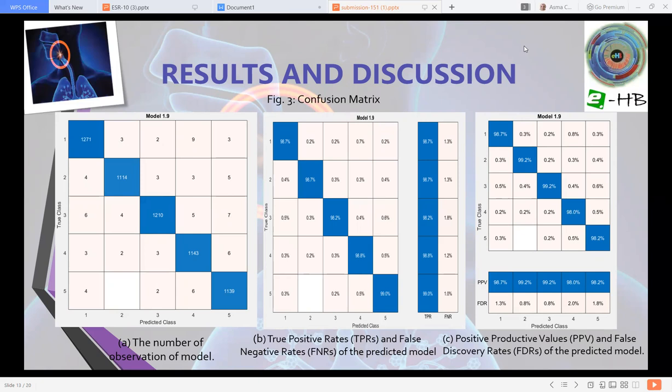Plot B shows true positive rates and false negative rates of the predicted model. The true positive rate is the proportion of correctly classified observations per true class. Plot C shows positive predictive values and false discovery rates of the predicted model. Positive predictive value is the proportion of correctly classified observations per predicted class, and false discovery rate is the proportion of incorrectly predicted points in each class.